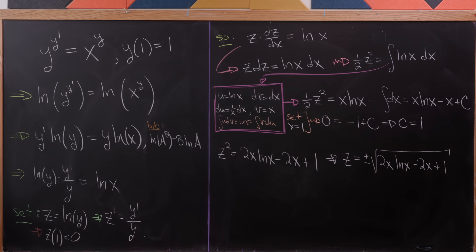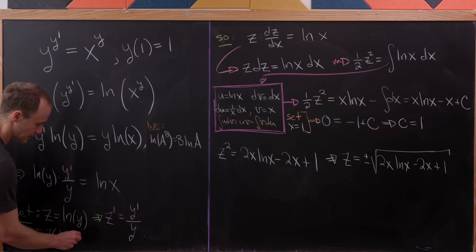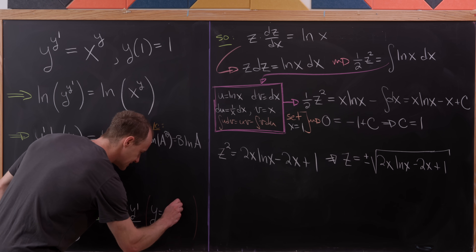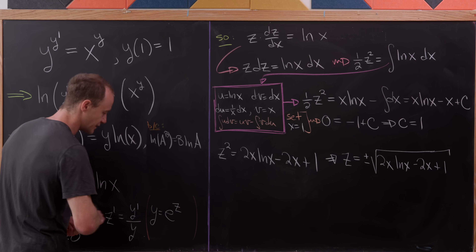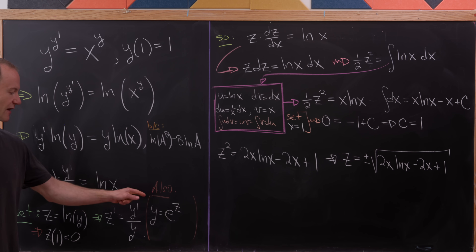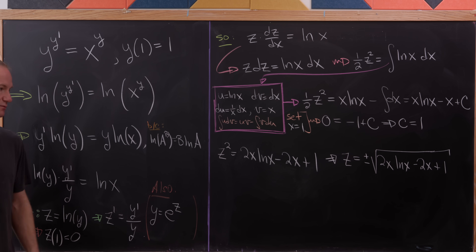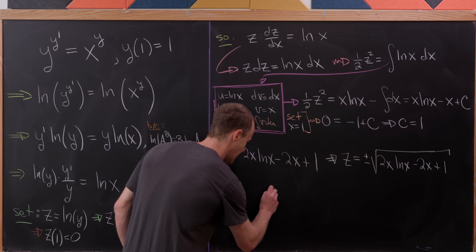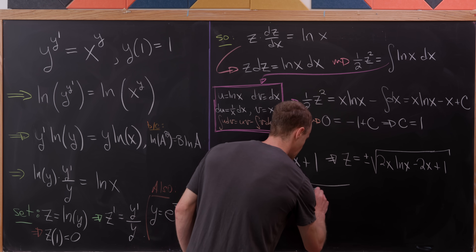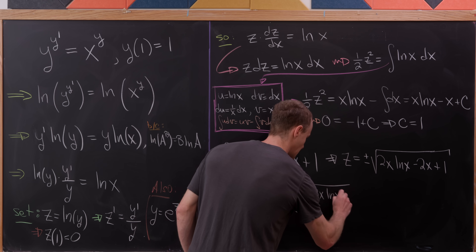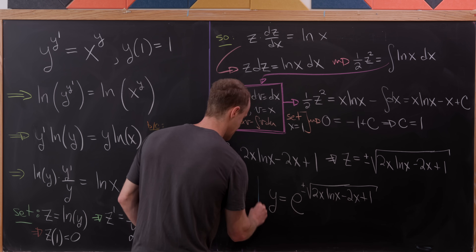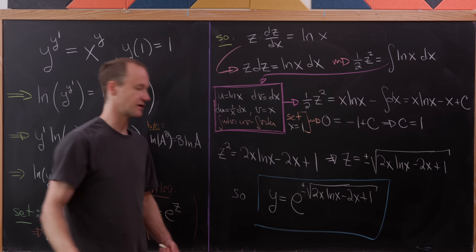Now we go back to the original variable. Since z = ln(y), we also have y = e^z. So our final answer is y = e^(±√(2x·ln(x) − 2x + 1)). And that's a good place to stop.